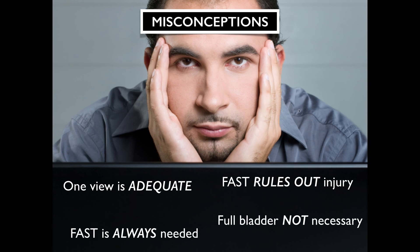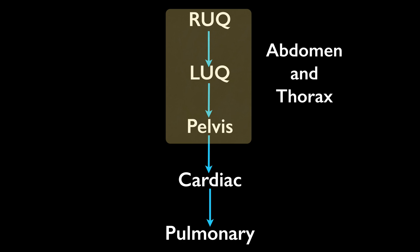In summary, always get all your views — one view is not adequate. FAST does not rule out injury; it only identifies fluid in the abdomen, not the actual injury site. FAST is not always needed if the patient is stable and can get a CT scan. A full bladder is necessary when scanning the pelvis. The sequence is: right upper quadrant, left upper quadrant ruling out fluid in chest and abdomen, pelvis, cardiac ruling out pericardial effusion and tamponade, and lastly lungs to rule out pneumothorax.